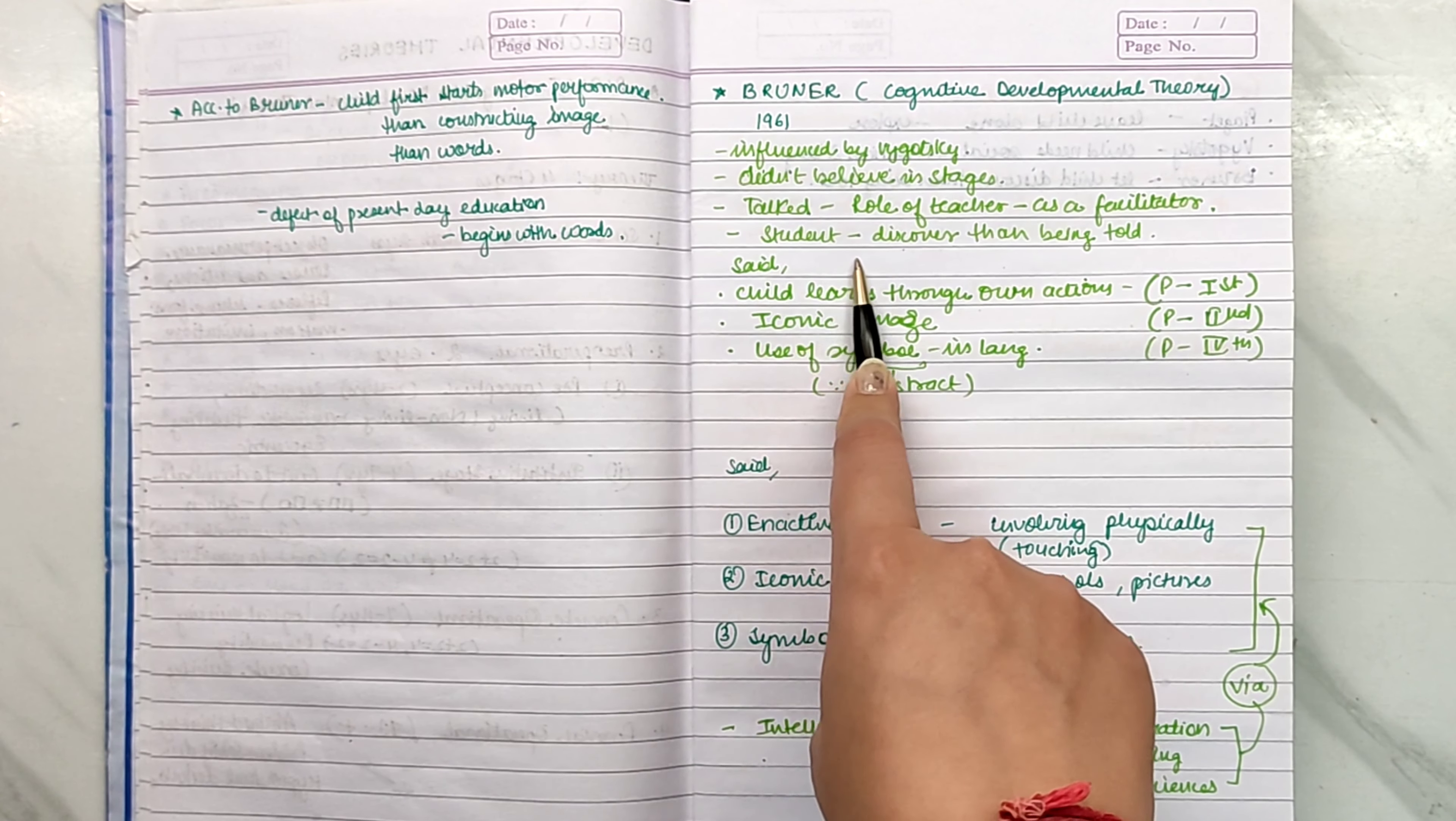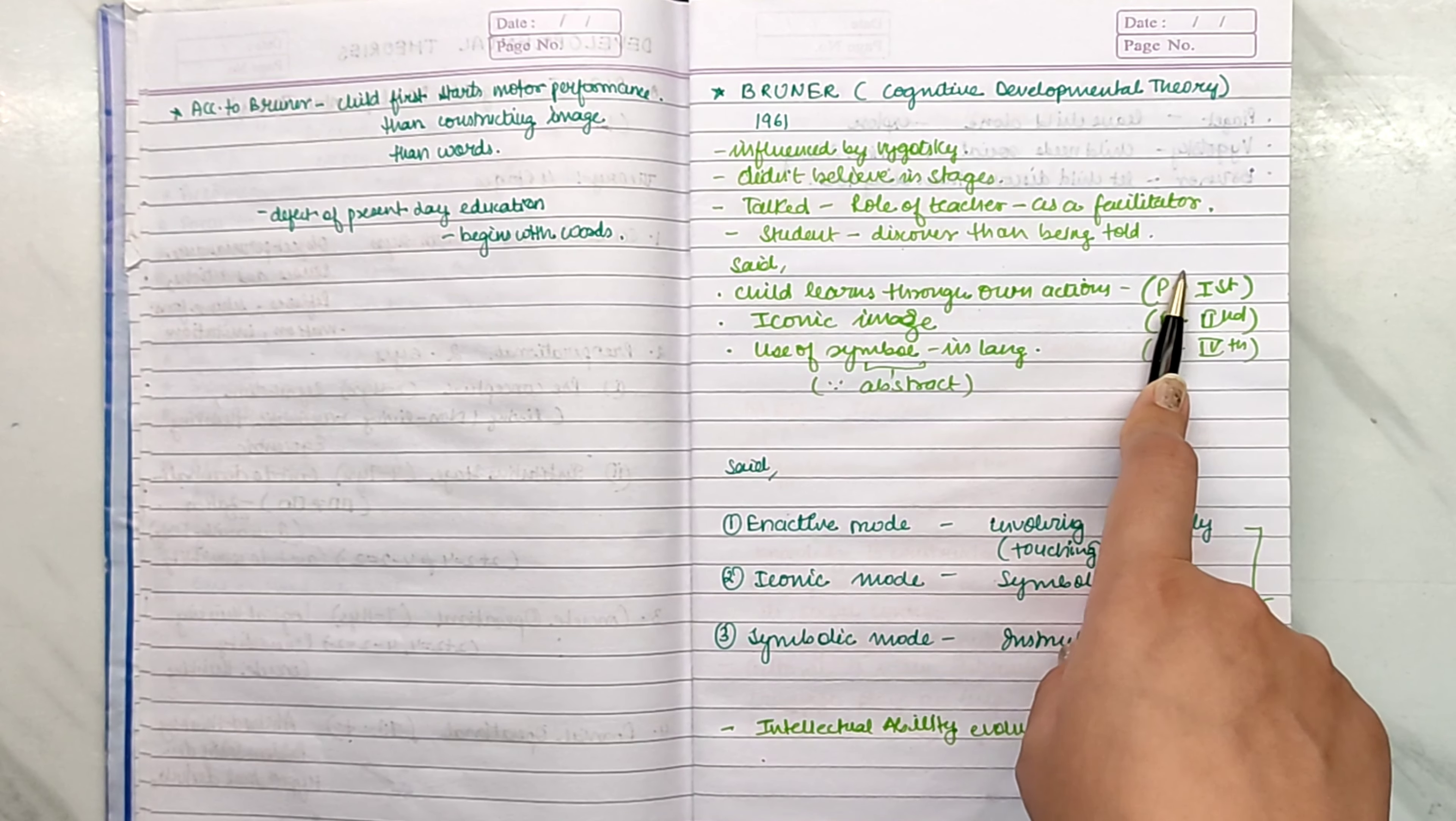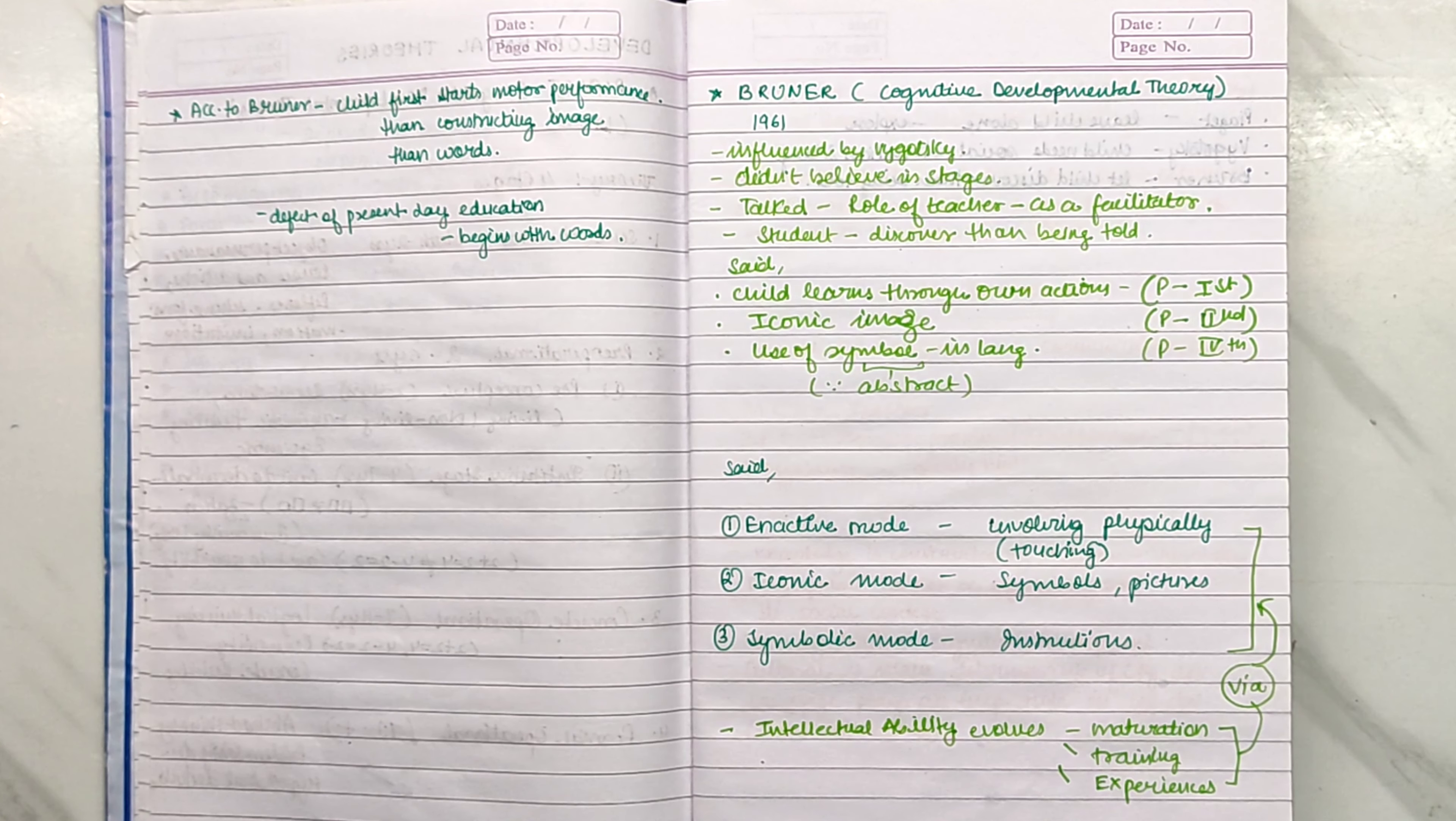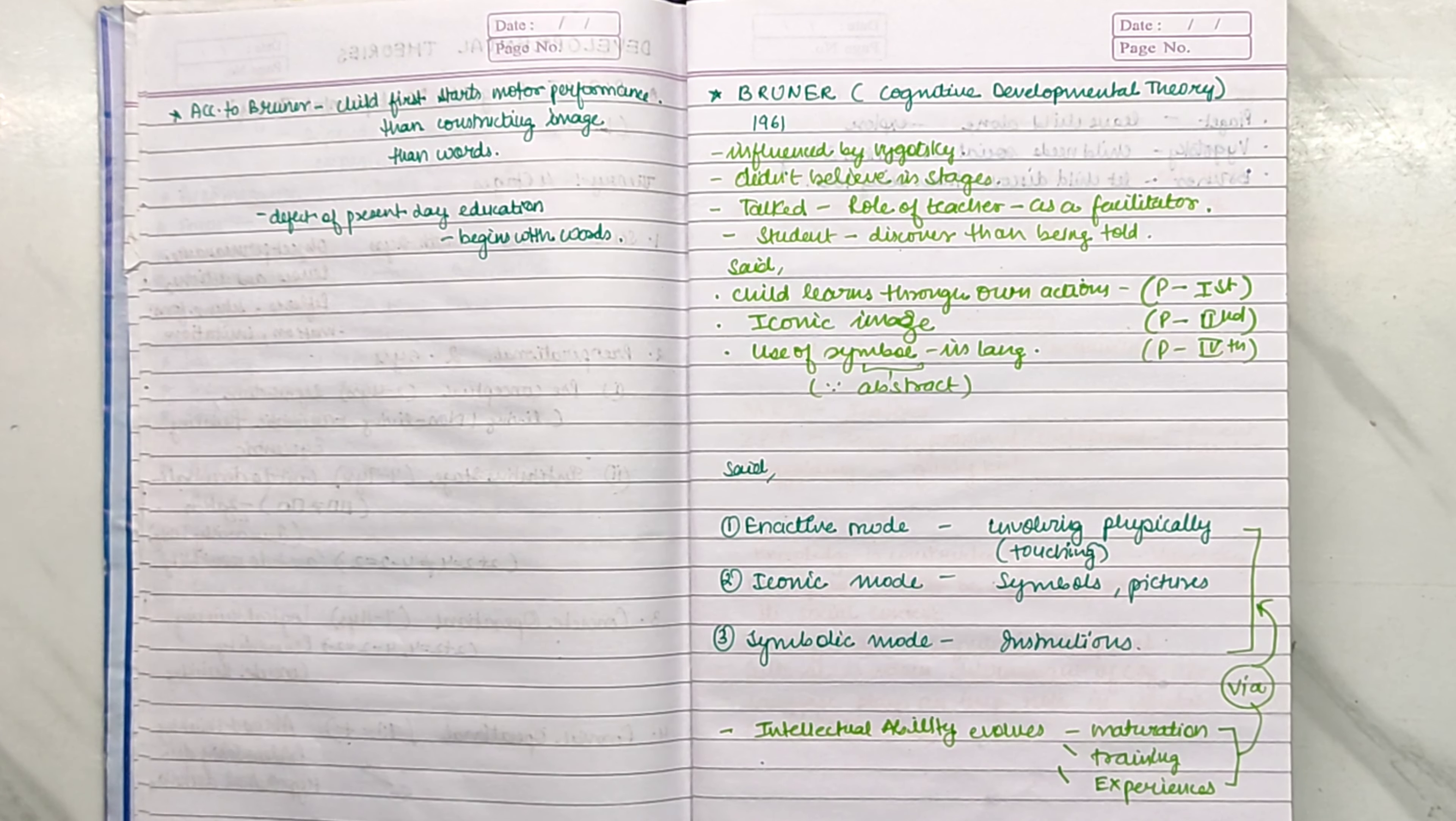They said that the students should discover them rather than being told. It means that if you are telling the child that the answers are the same, the question is the same and the answer is the same, the process is wrong. The approach is wrong. You have to keep their interest in place.